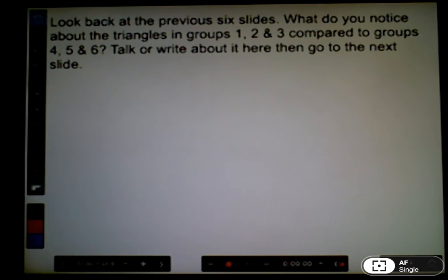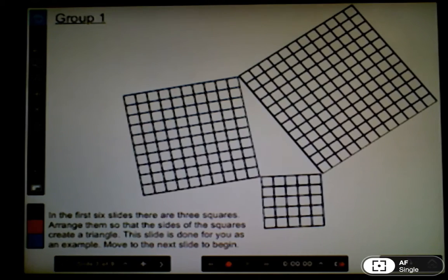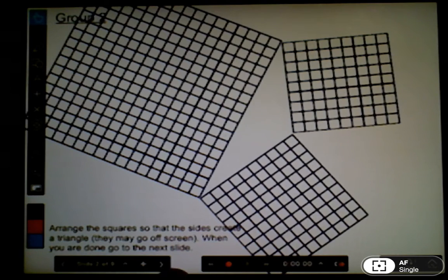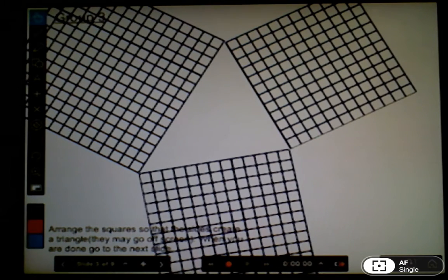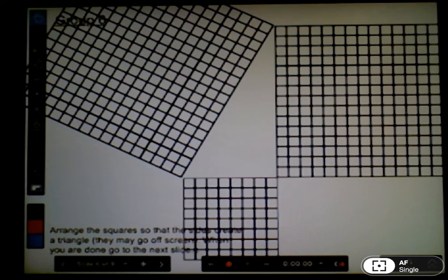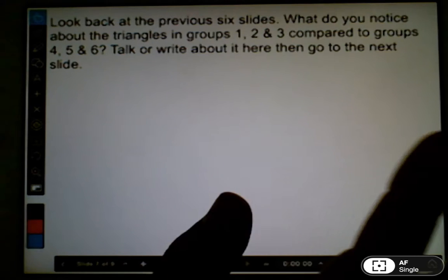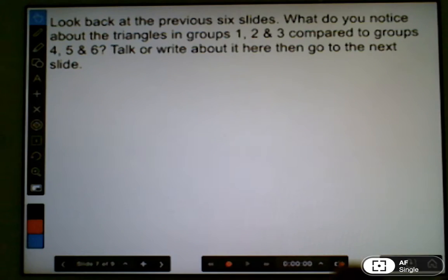The first thing we have them do is look back and ask what do you notice about the three triangles? Hopefully what they'll notice is that in groups 1, 2, and 3, the triangles are nothing special, but in the last three groups—4, 5, and 6—they produce right angle triangles. They can write about it or talk about it here on this slide.